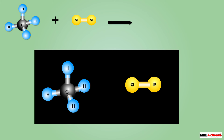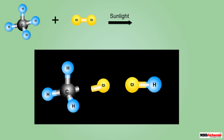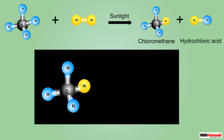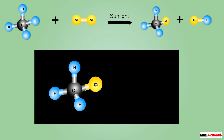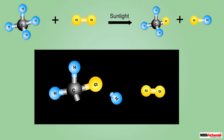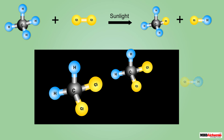Let's now check out the reaction of methane with chlorine. When methane is made to react with chlorine in the presence of sunlight, one of its hydrogen atoms gets replaced by a chlorine atom. The product so formed is chloromethane.